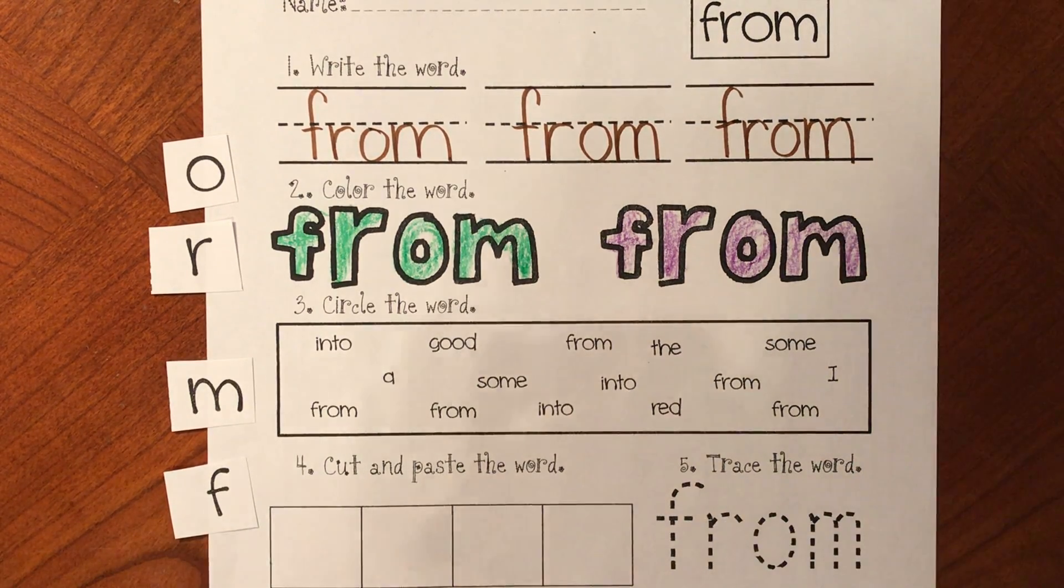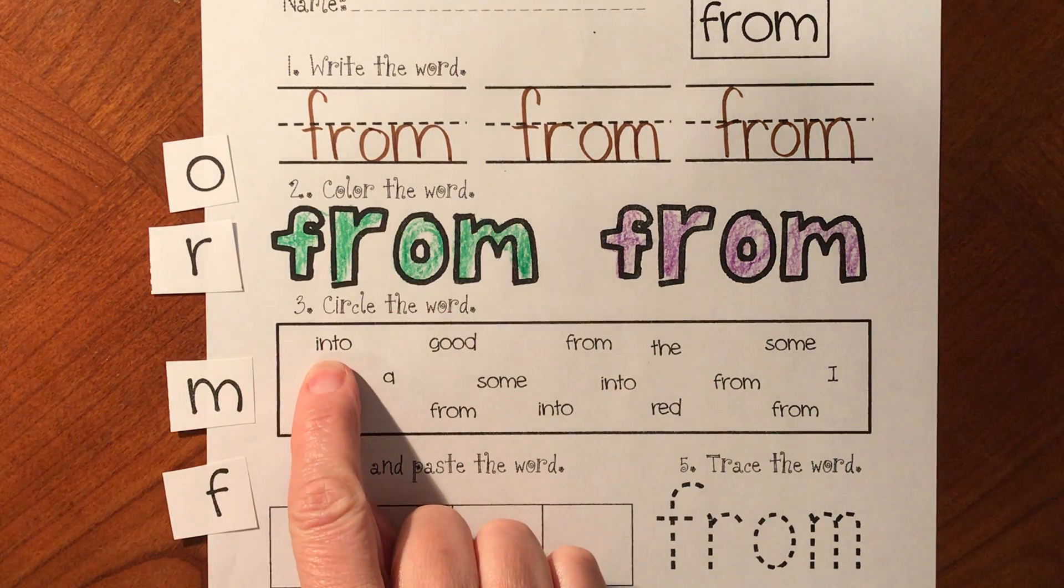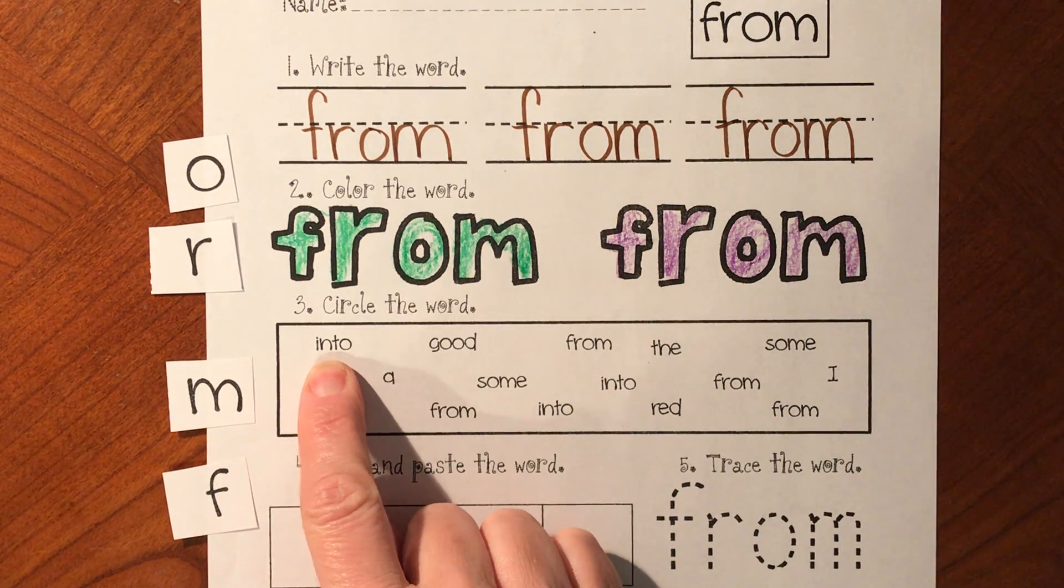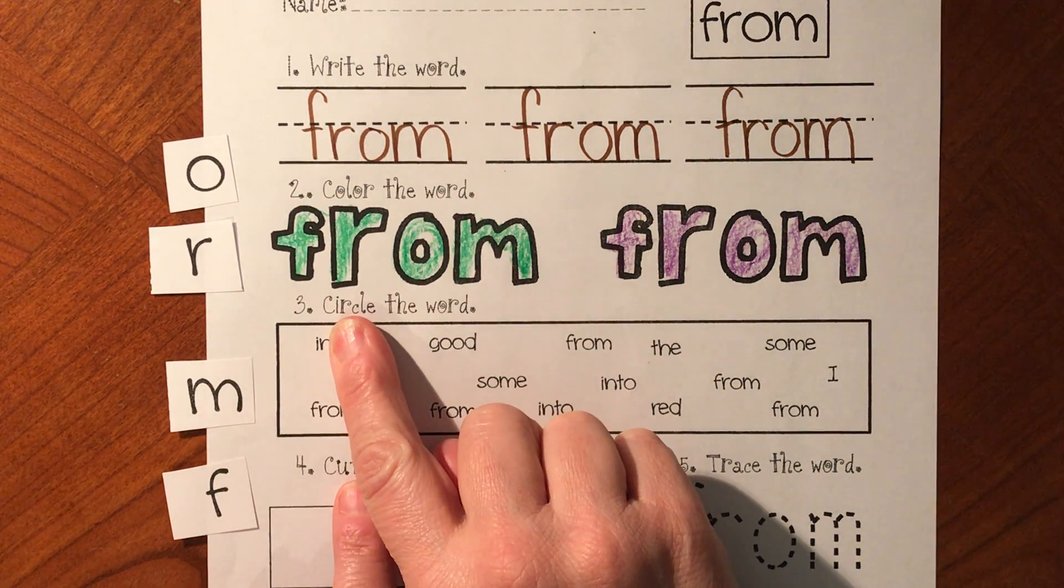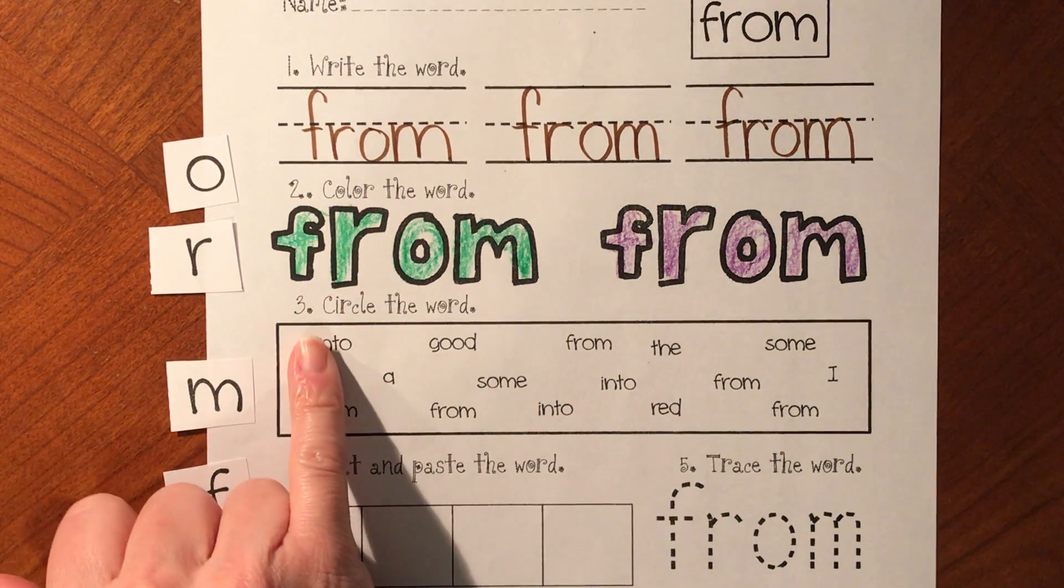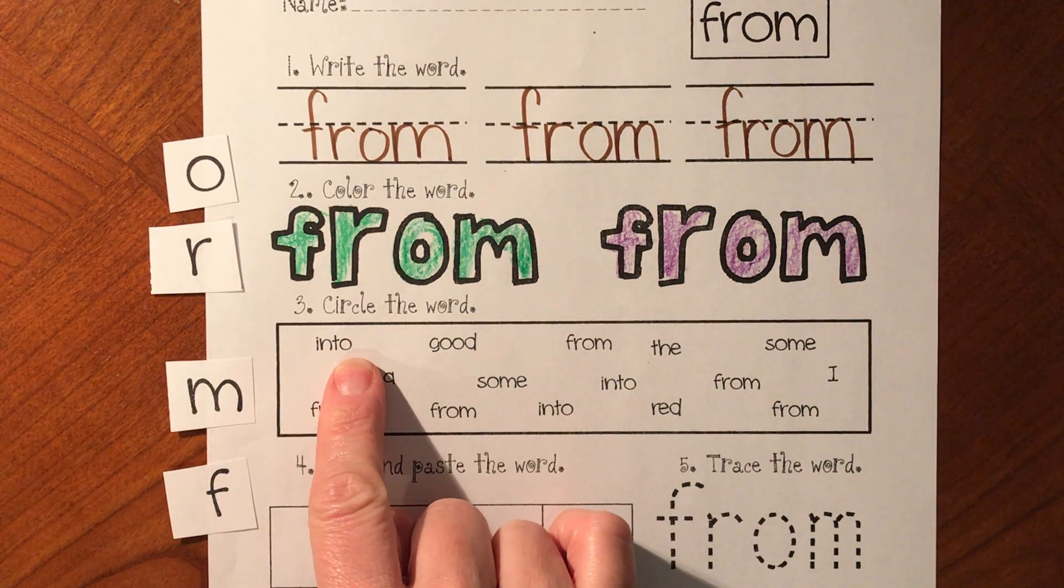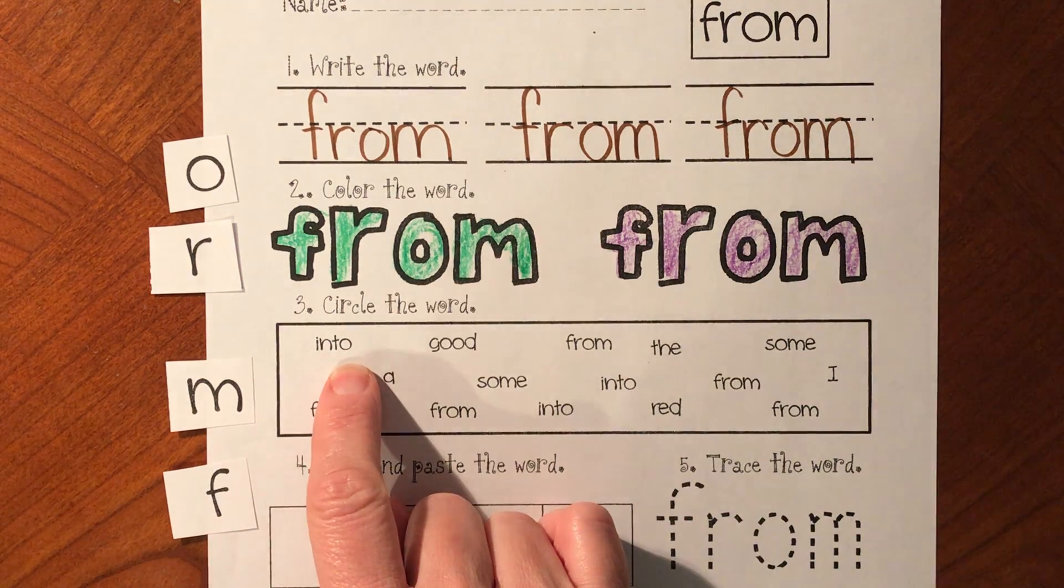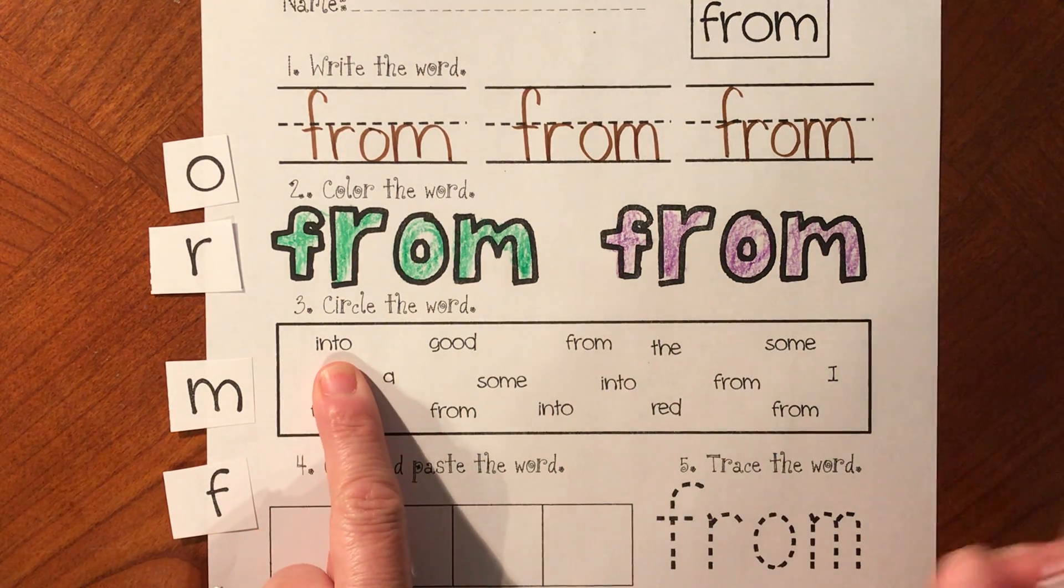All right, friends. Now we need to find that word from. Is this the word from? No, that's a compound word. It has the word in and it has the word to and together it's into. Like I go into the house. Into. We don't want into.